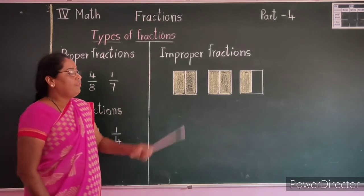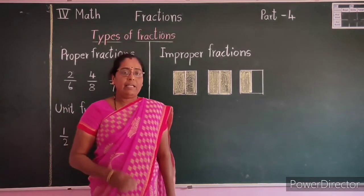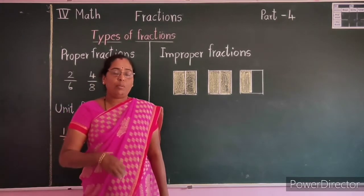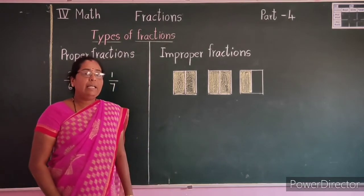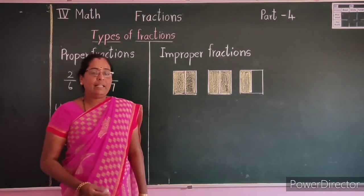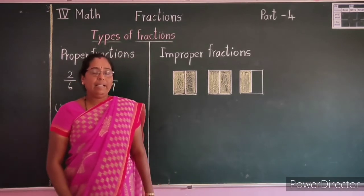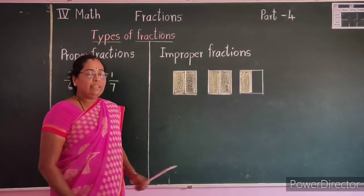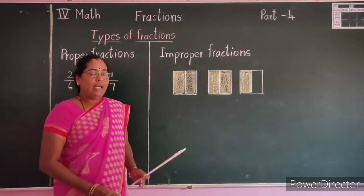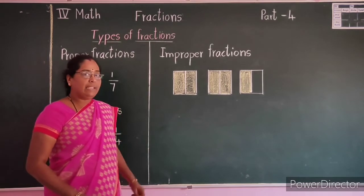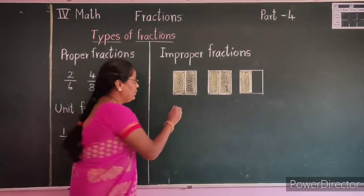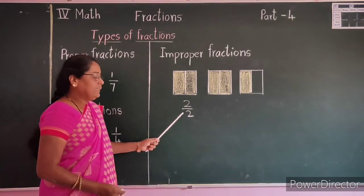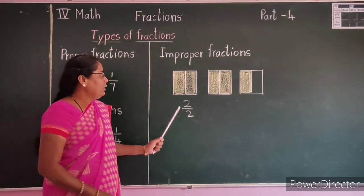Children, let's see improper fractions. The fractions which are equal to or more than one whole are called improper fractions. Let's understand improper fractions with one example. Here, look at this square — the square is divided equally into two parts and both parts are shaded. The fraction for this square is 2 by 2. Since numerator is equal to denominator, it equals 1.